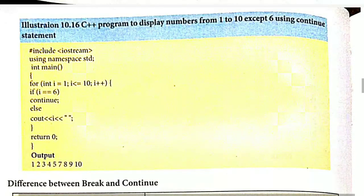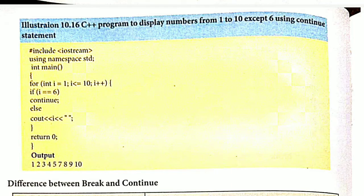Here is an example program to display numbers from 1 to 10 except 6, using the continue statement. If you want any exception from a loop you can use the continue statement. The for loop runs with i equal to 1, i less than or equal to 10, i plus plus. If the condition i equals 6 is true, continue is executed; otherwise, the value of i is printed.